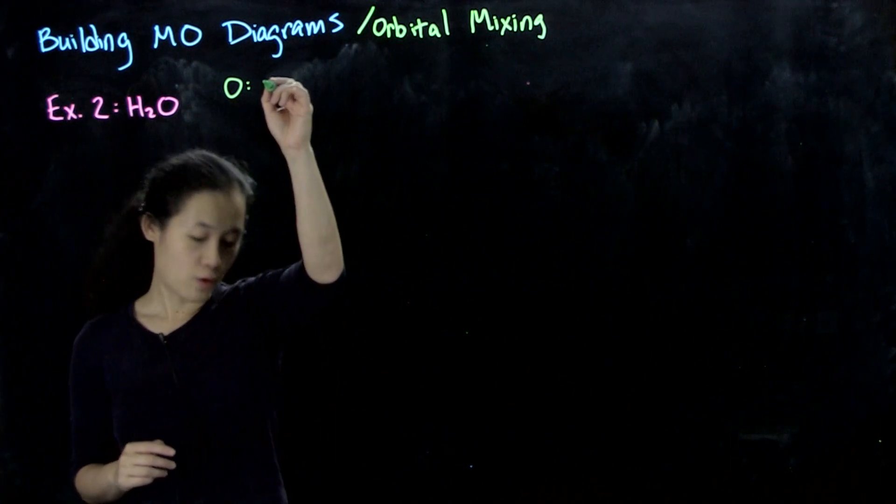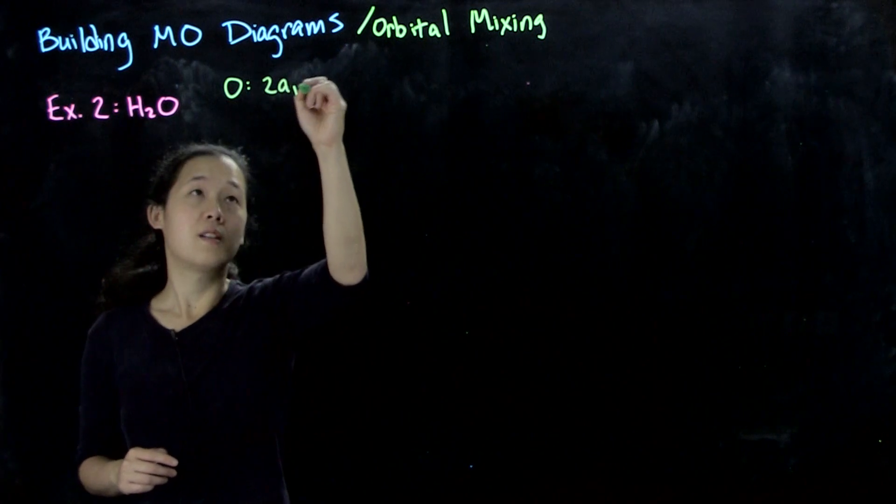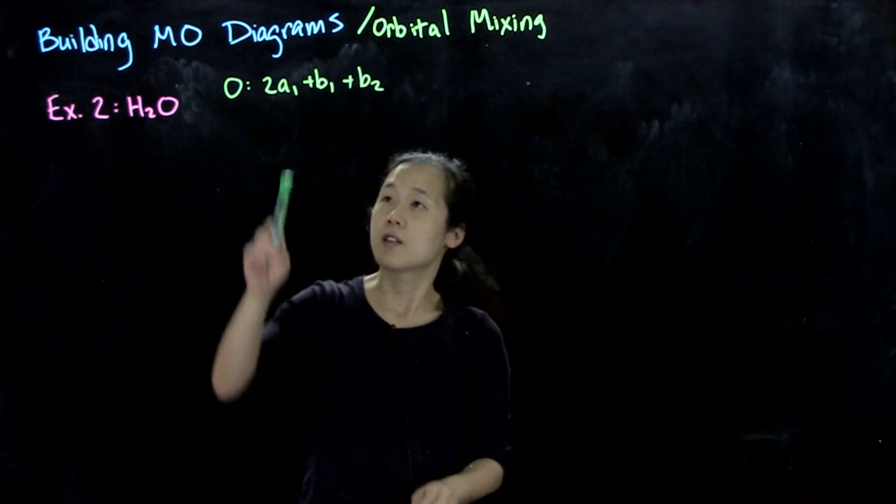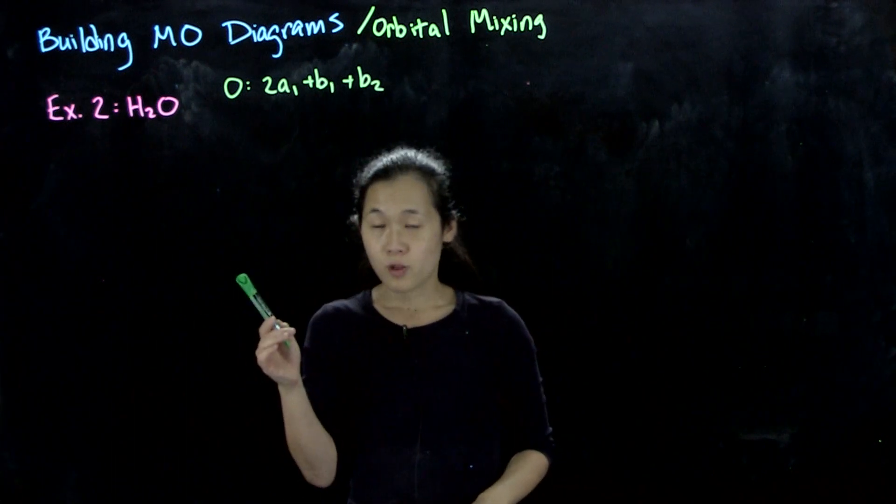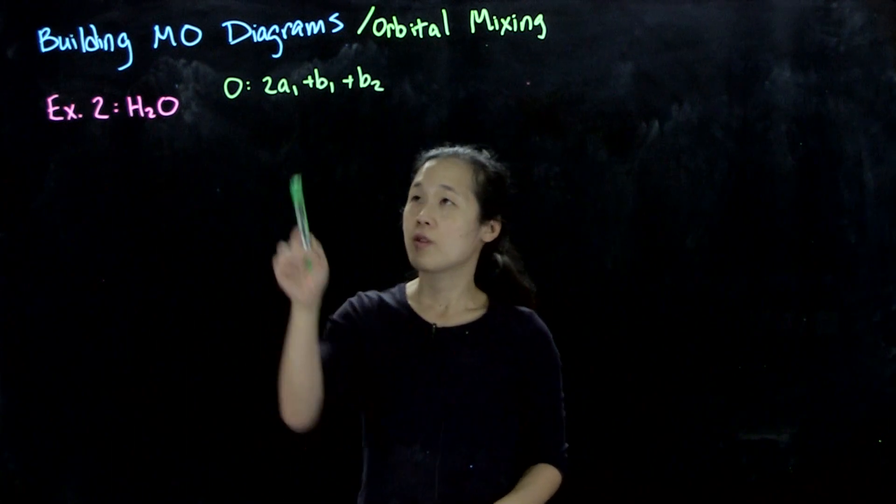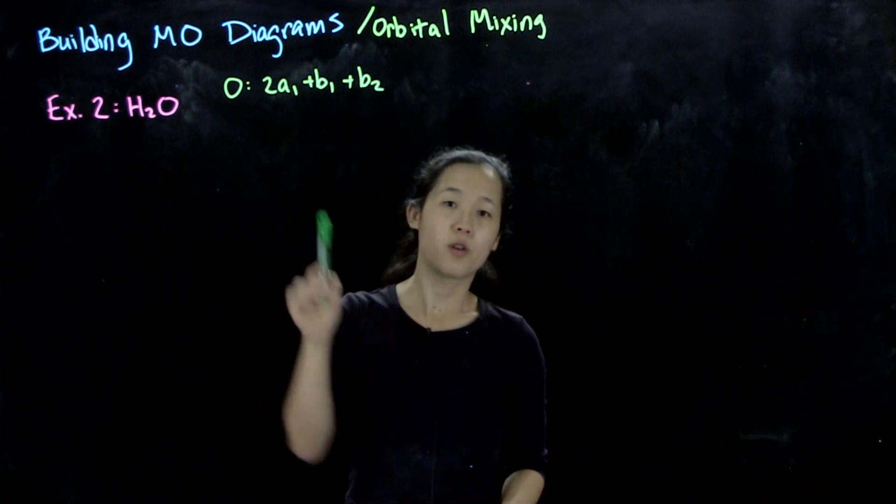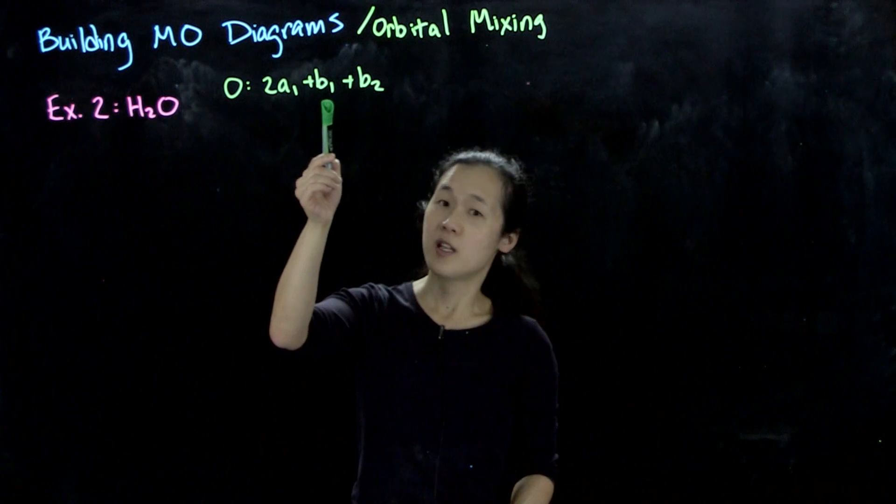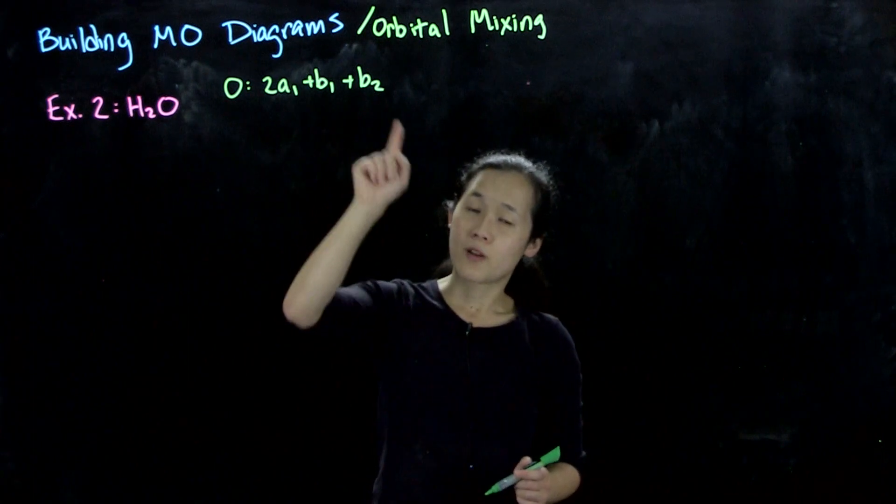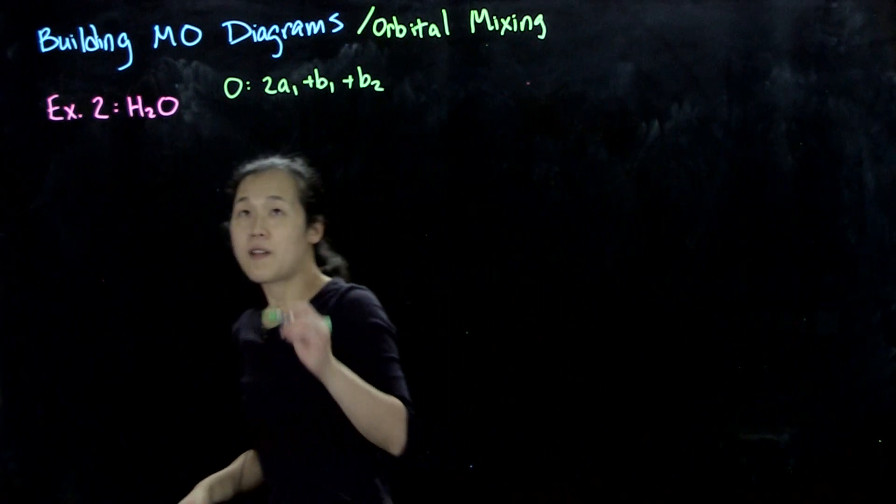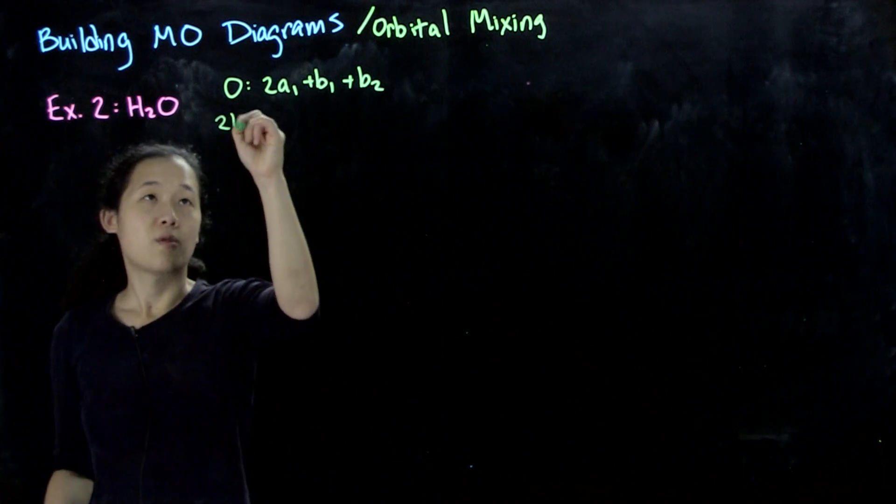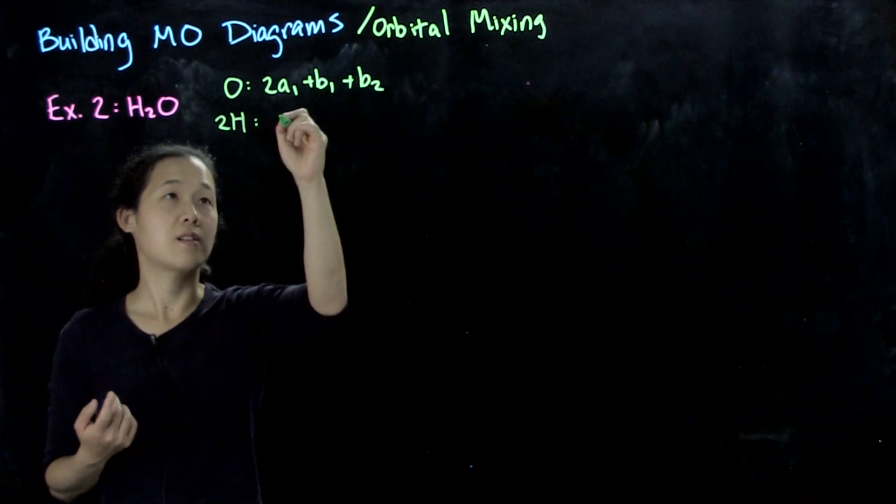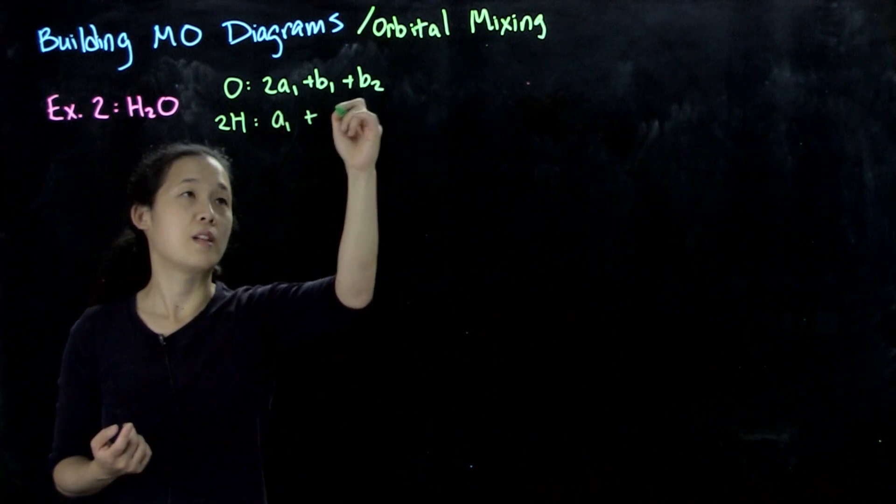They transform as 2a1 plus b1 plus b2. This 2a1 is because the s orbital and the pz orbital both transform as a1 - they're both symmetric. The px orbital transforms as b1, and the py orbital transforms as b2. Our two H atoms are related by symmetry, and gamma 2H reduces down to the two SALCs: a1 plus b1.